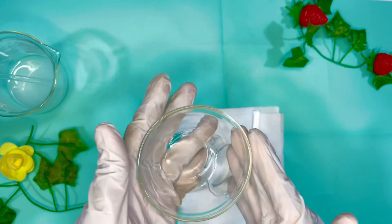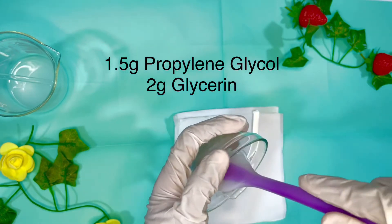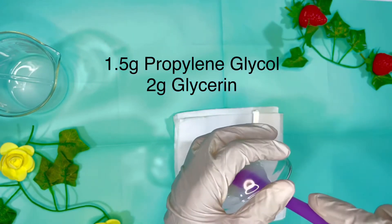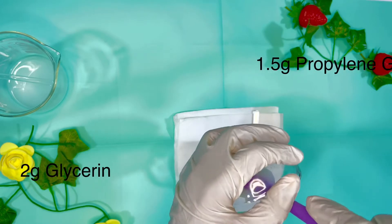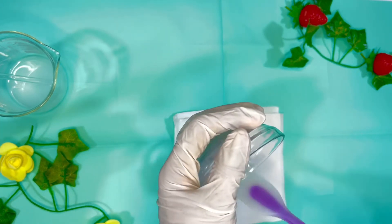And then here are my humectants, which is propylene glycol and then glycerin. I have 1.5 grams of propylene glycol and then 2 grams of glycerin in there. So I'm gonna add it into my distilled water and my Liquid Germall Plus.